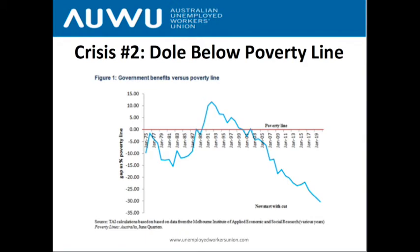The next graph covers the second major crisis: the complete inadequacy of the unemployment entitlement known as Newstart. The Newstart rate is currently about 35 percent below the poverty line — in money terms that's about $380 per fortnight below the poverty line.